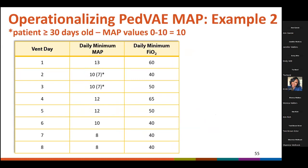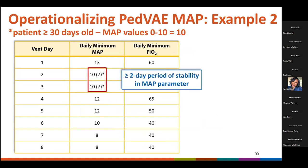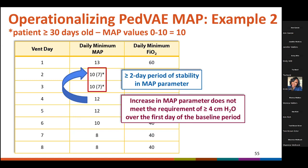In this example of a patient of at least 30 days of age, there's a period of stability in the daily minimum values in the MAP parameter on vent days two and three. For patients 30 days of age or older, MAP values of 0 to 10 are equivalent to 10. This baseline period is immediately followed by an increase in the daily minimum MAP on vent day four. However, the increase is not at least 4 centimeters of water over the daily minimum MAP of the first day in the baseline period, which is vent day two where the daily minimum MAP is 10. So PVAE is not met.